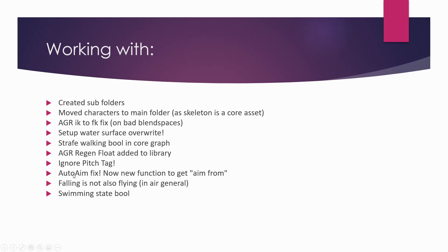I partially fixed the auto-aim and added a new function to the interface which is called 'aim from'. It allows you to specify what is the origin of the calculation of the automatic aim - so you can do a calculation based on camera position, or based on a specific mesh, scene component, or even a very specific socket like a mesh head socket for example.